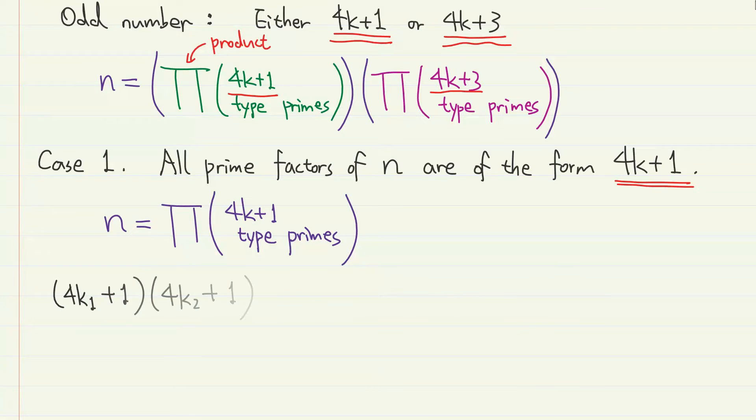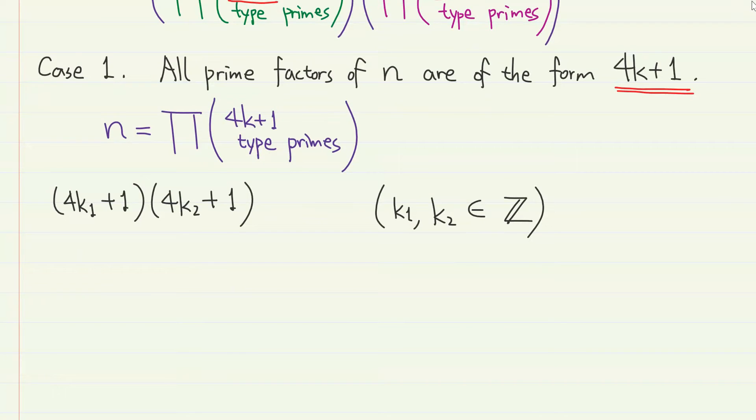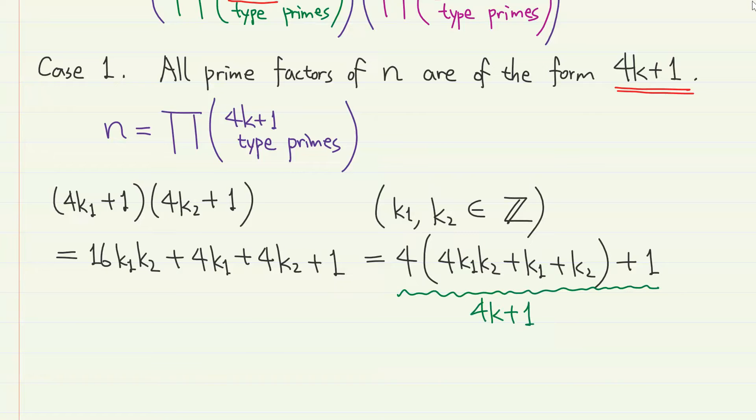Here, for a simpler case, let us first take a look at the product of only two integers of the form 4k plus 1. So we multiply 4k1 plus 1 and 4k2 plus 1. If we expand, we have 16k1k2 plus 4k1 plus 4k2 plus 1, which is 4 times 4k1k2 plus k1 plus k2 plus 1. You can see that the result is an integer of the form 4k plus 1.